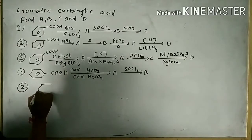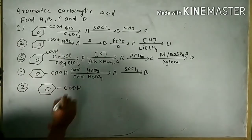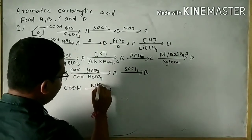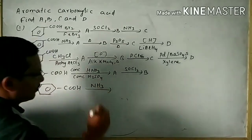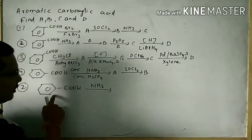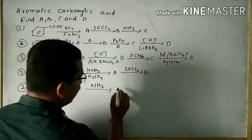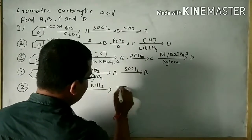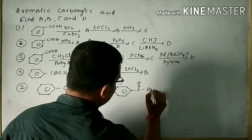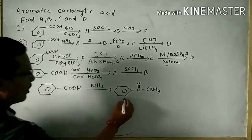Now I will solve the second question. This is your benzoic acid. It is subjected to reaction with NH3. This is your acid. When an acid-base reaction takes place, then a salt will be produced. That is your ammonium benzoate, and it is considered as the product A.